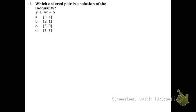Which ordered pair is a solution of the inequality? Option 1 is to graph it and then plot the points to see which one is in the shaded area. Another method is to just plug the points in immediately — I think you'd prefer that way. So we're going to plug in the x and the y. We're going to have 4 is greater than or equal to 4 times 3 minus 5. That means we have 12 minus 5, which is 7. Is 4 greater than or equal to 7? No. Cross it out.